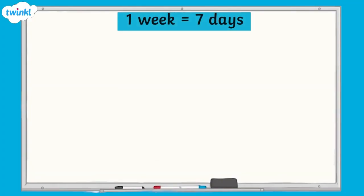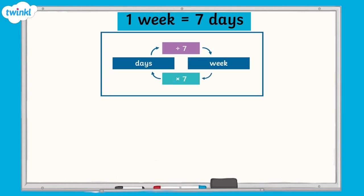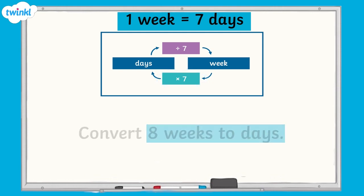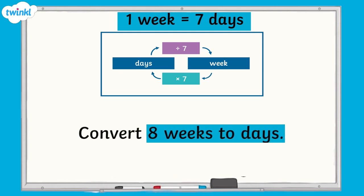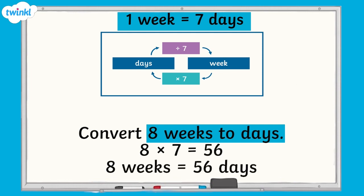Now let's take a look at how to convert between days and weeks. We already know that there are 7 days in a week. To convert from weeks to days, we multiply the number of weeks by 7 to give us a total number in days. For example, to convert 8 weeks to days, we would multiply 8 by 7, which equals 56. 8 weeks equals 56 days.